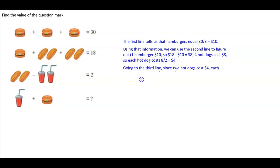Now going to the third line, since two hot dogs cost $4, each drink must cost $1 because $4 minus $2 is $2. So therefore 2 divided by 2 is going to give us $1.